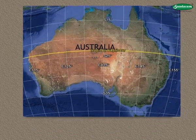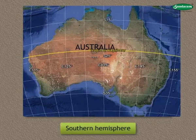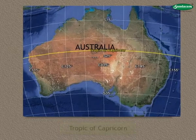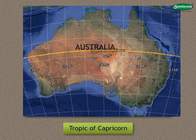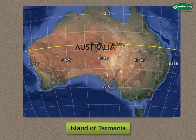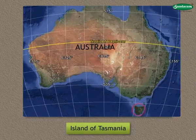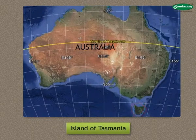This continent is totally in the southern hemisphere. The Tropic of Capricorn passes roughly through the center of the continent. The island of Tasmania, located to the southeast of this continent, is a part of this continent.